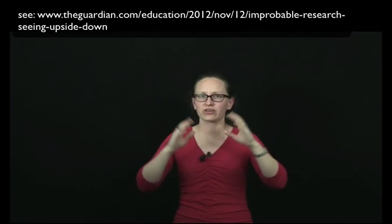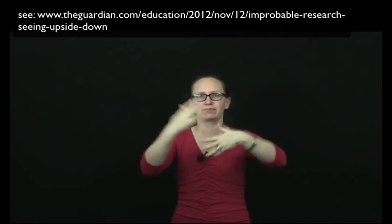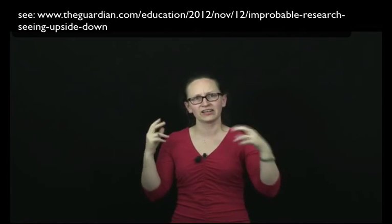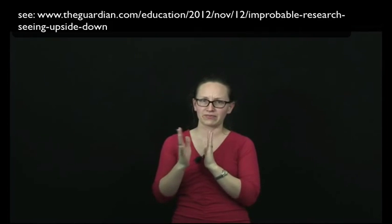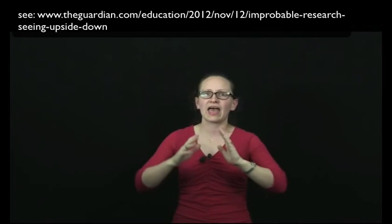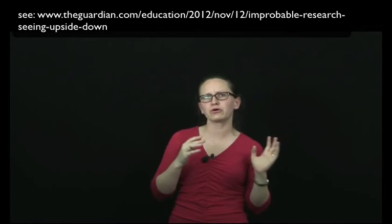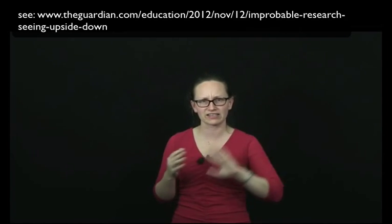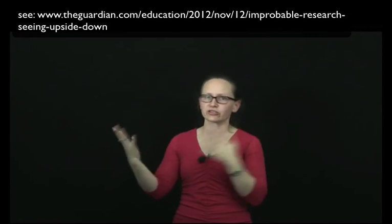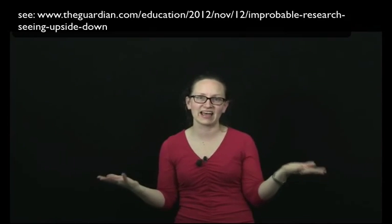As we've seen, the brain is really important for determining what we see. A really interesting experiment which has been run a few times by different people is to wear upside down glasses. Upside down glasses flip the image that we see, so you may want to think about what type of lens shape could achieve that. What they found was that if people wore the upside down glasses for a day or so they saw everything as upside down, not surprisingly.